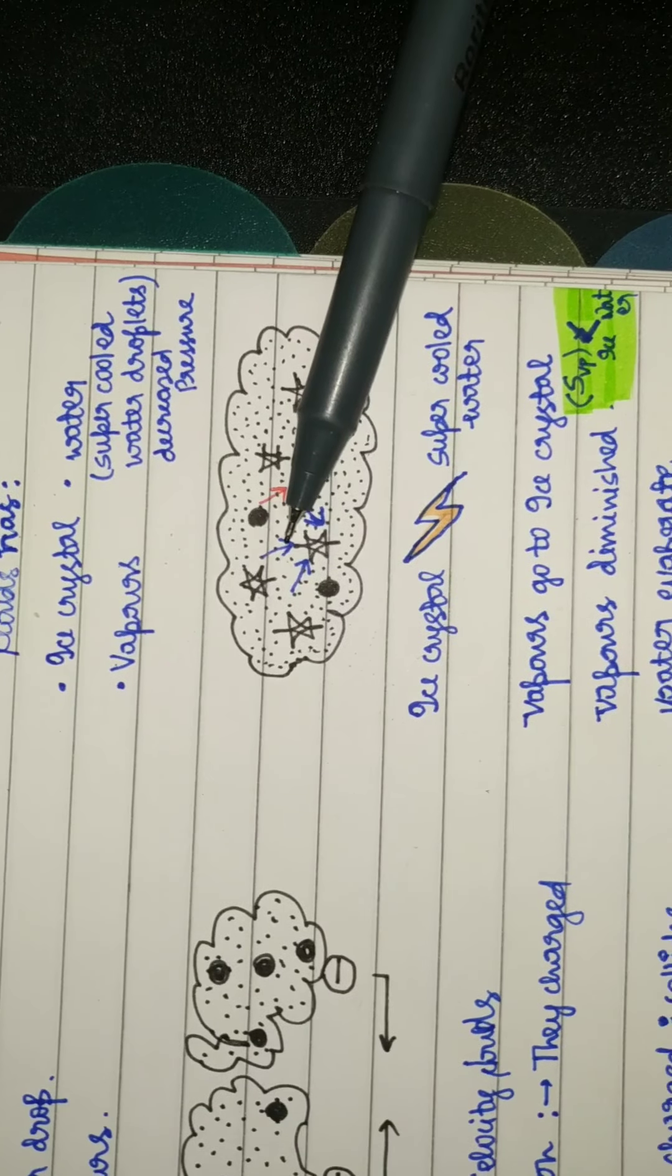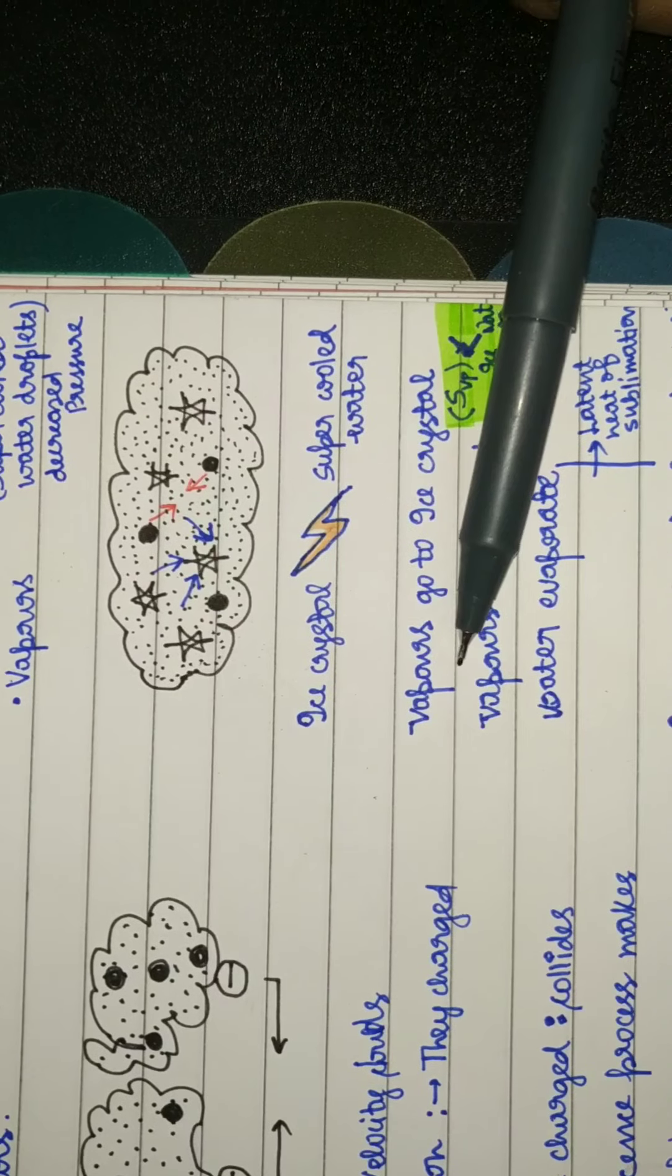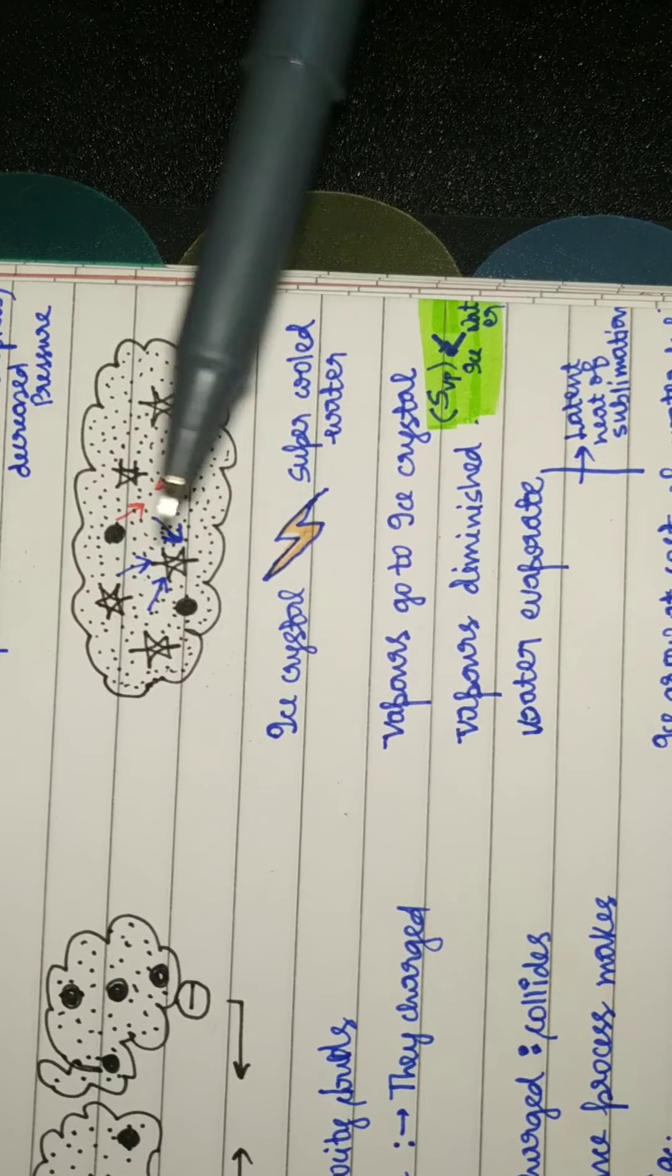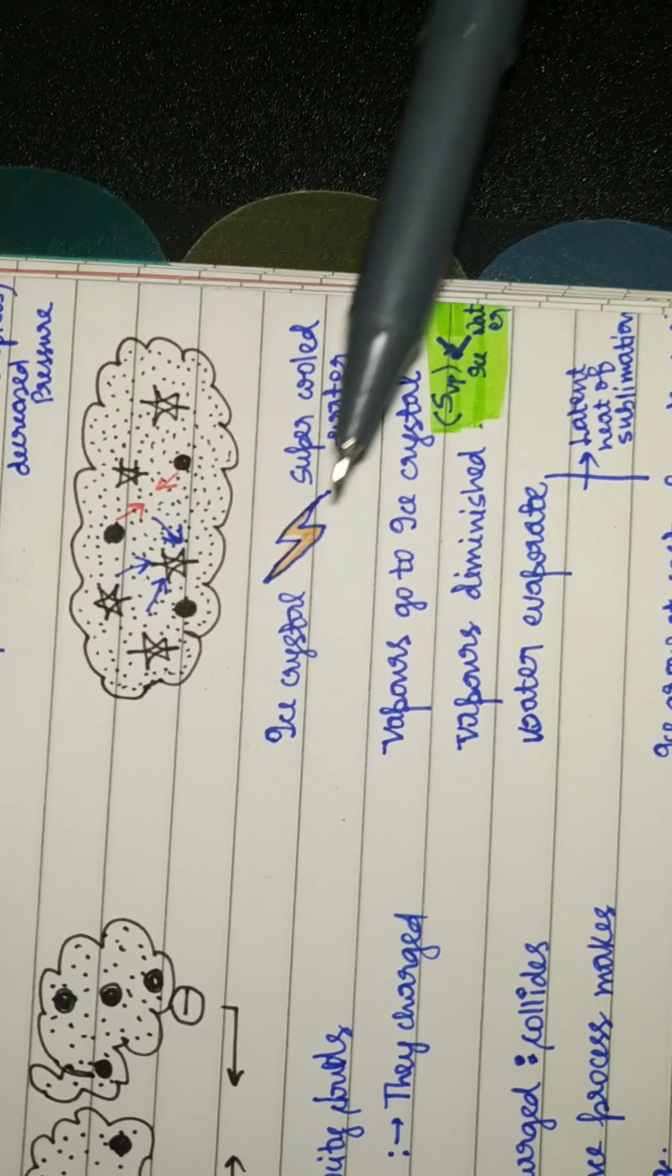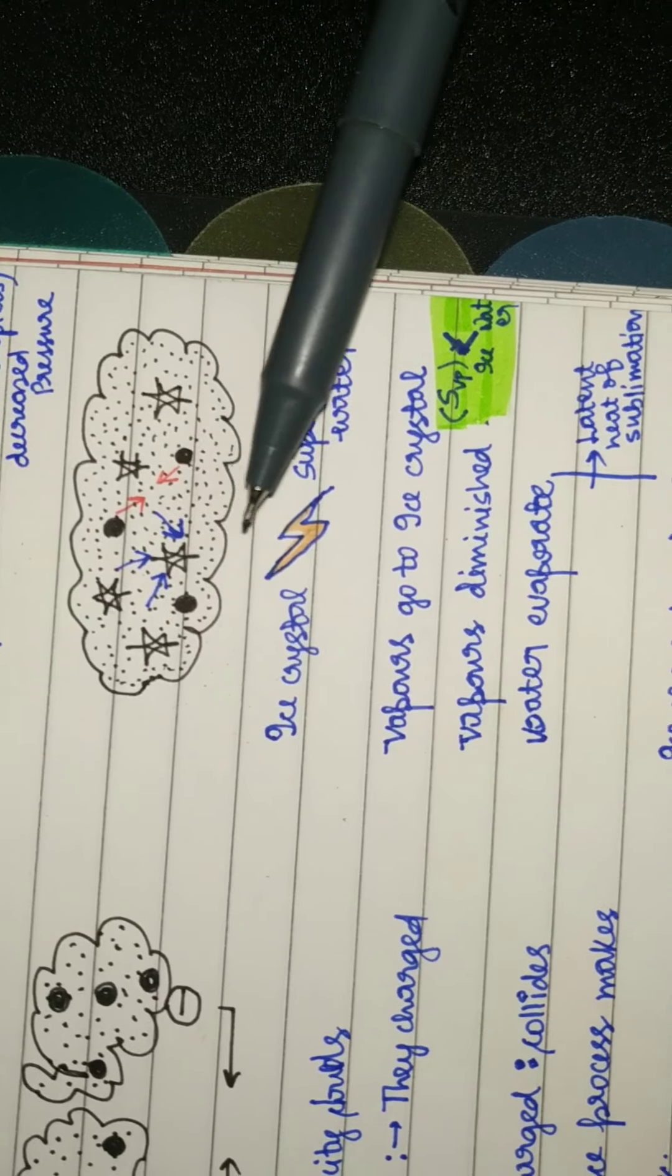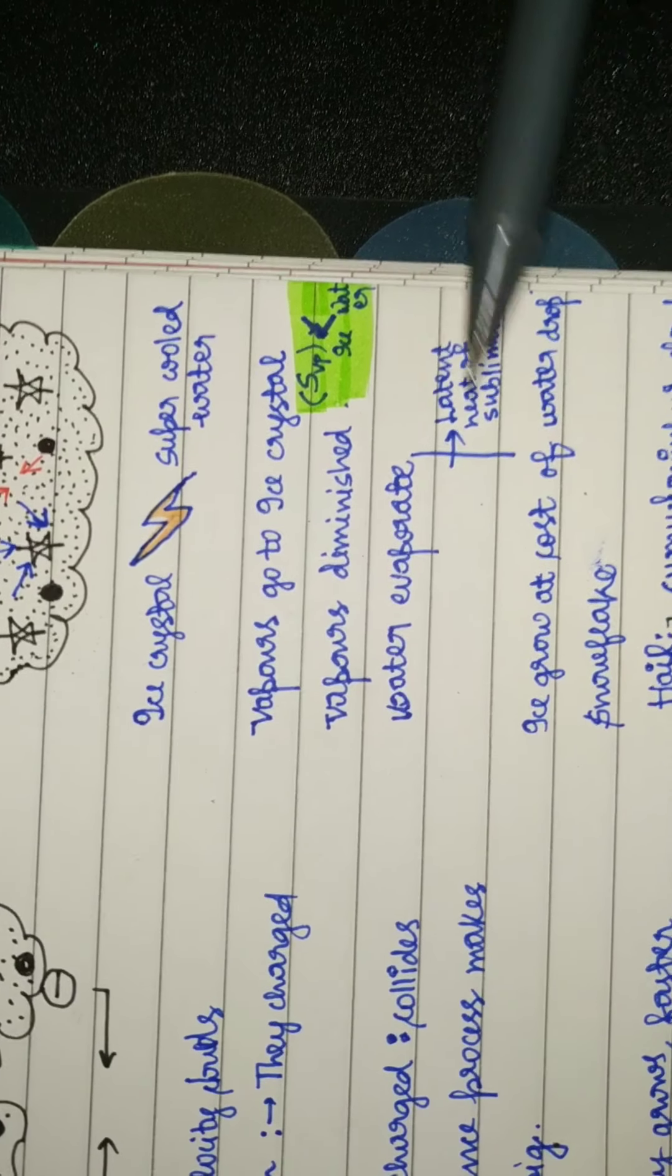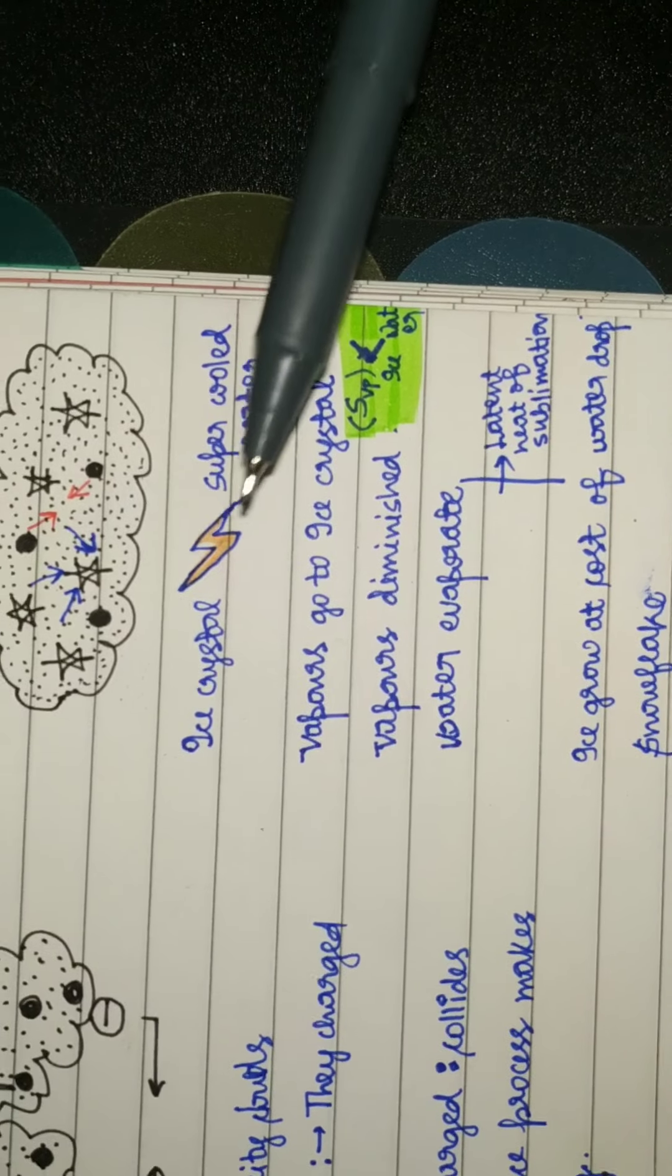So all the vapors converge on this low pressure. Soon the vapor diminishes. Upon decreasing concentration of vapor, water comes in charity mode and water starts evaporating because the latent heat of sublimation of the water vapor causes it to evaporate. Hence, ice grows at the cost of water droplet. Such a wonderful display of team spirit.